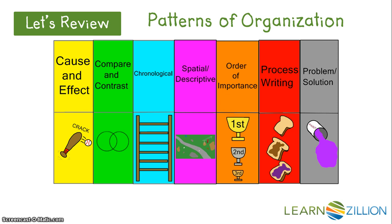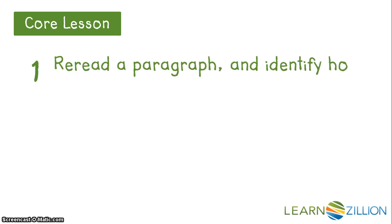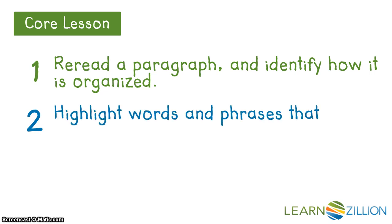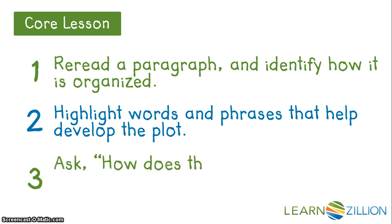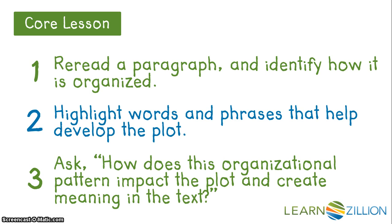In order to identify the organizational pattern, you have to do a close reading of the entire text. When we are trying to identify the text structure and how it contributes to the meaning of the overall text, we're going to follow three steps. First, re-read a paragraph and identify how it is organized. Then, highlight the words and phrases that help develop the plot. And third, ask ourselves: how does this organizational pattern impact the plot and create meaning in the text?